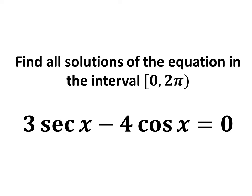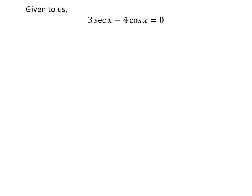In this video, we will learn to find all solutions of the equation 3 times secant of x minus 4 times cosine of x is equal to 0 in the interval 0 to 2 times pi. Given: 3 times secant of x minus 4 times cosine of x is equal to 0.